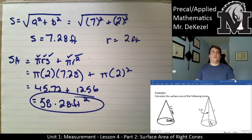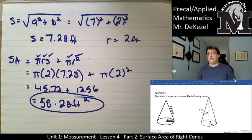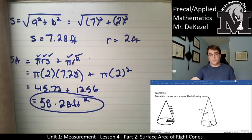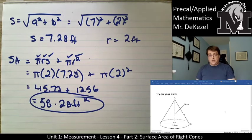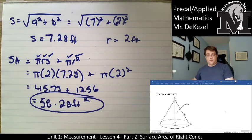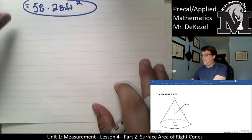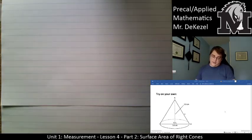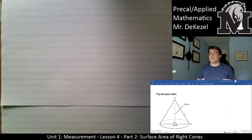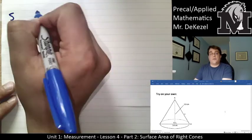It's just a matter of finding the slant height and radius, plugging them into the formula, and calculating. The next one is a try-it-on-your-own — pause here and give it a go. Welcome back. For the try-it-on-your-own, we have the height of the cone but not the slant height, so we need to find it using the Pythagorean theorem: slant height equals the root of a² plus b², using the height and the radius.